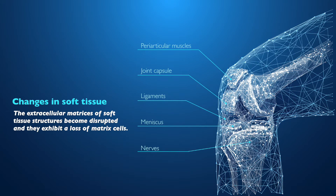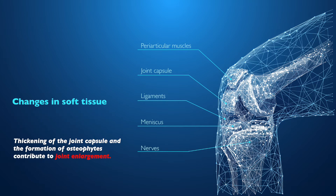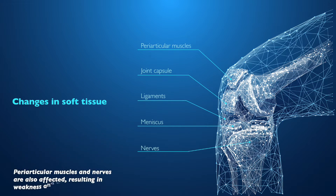Their extracellular matrices become disrupted, and they exhibit a loss of matrix cells. Thickening of the joint capsule, along with the formation of osteophytes, contributes to joint enlargement. Periarticular muscles and nerves are also affected by OA, resulting in weakness and pain.